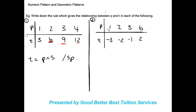Moving on, we have p values of 1, 2, 3, and 6, and t values of -3, -2, -1, and 2. How are we going to find the rule? Let's start with the first value. We need to get to -3 from 1. You could try multiplying 1 by -3 — that gives -3. But if we then try 2 times -3, we don't get -2, so multiplication doesn't work here.